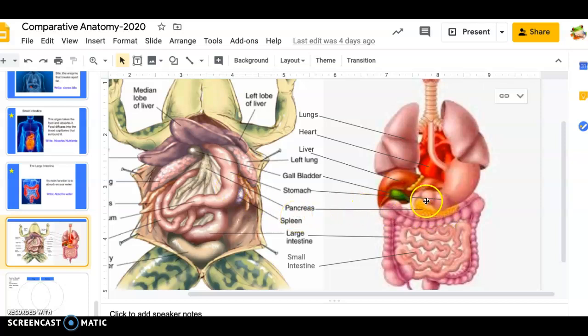The pancreas sits next to the stomach in the small intestine, in between the stomach and the small intestine. And for us, it sits on the low side. If you notice with the frog, it's actually above the curve in the stomach, but it still sits between the stomach and the small intestine. So it's right in the middle, just like it is with you and I.